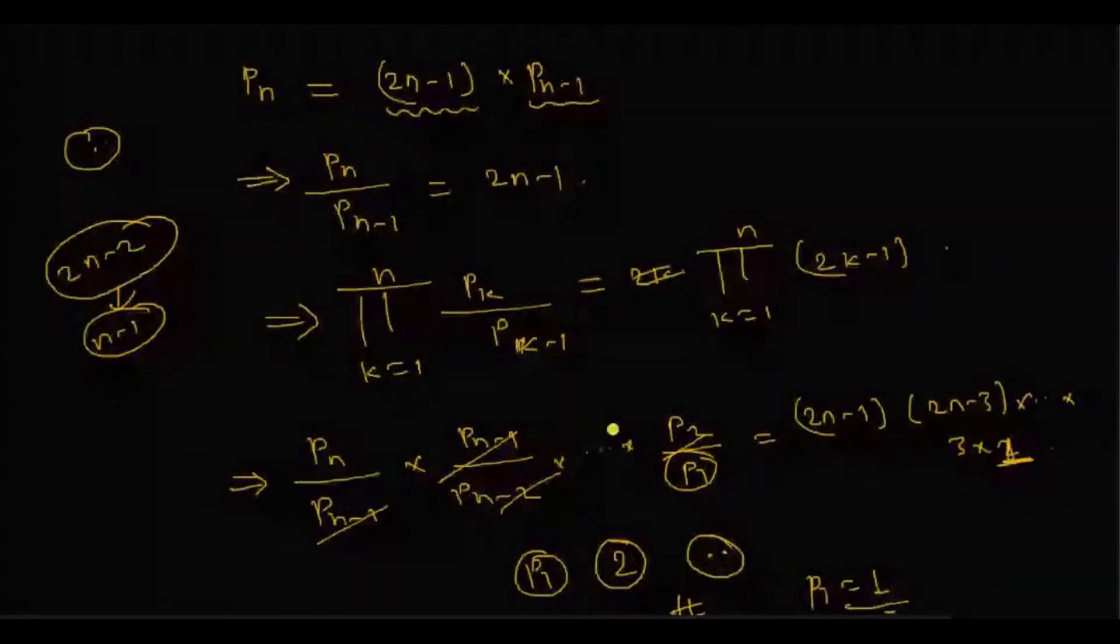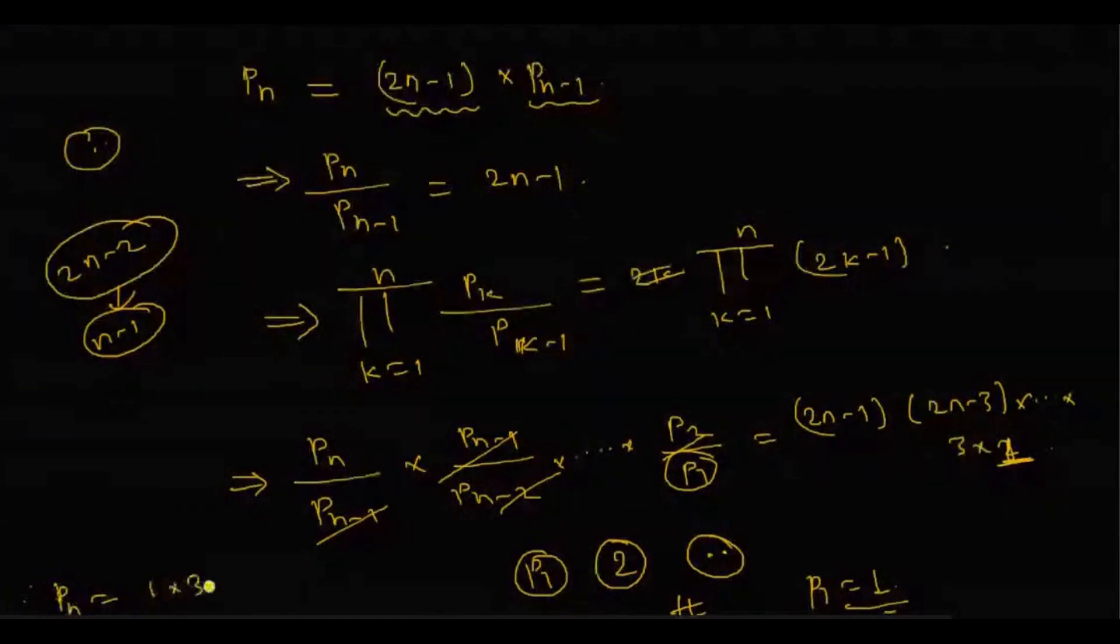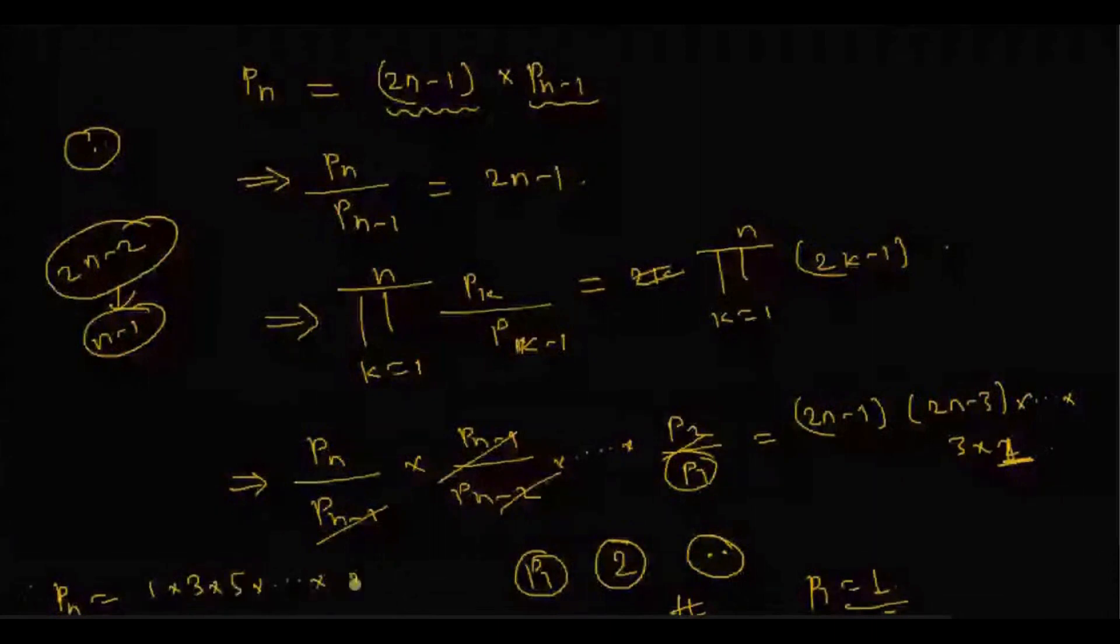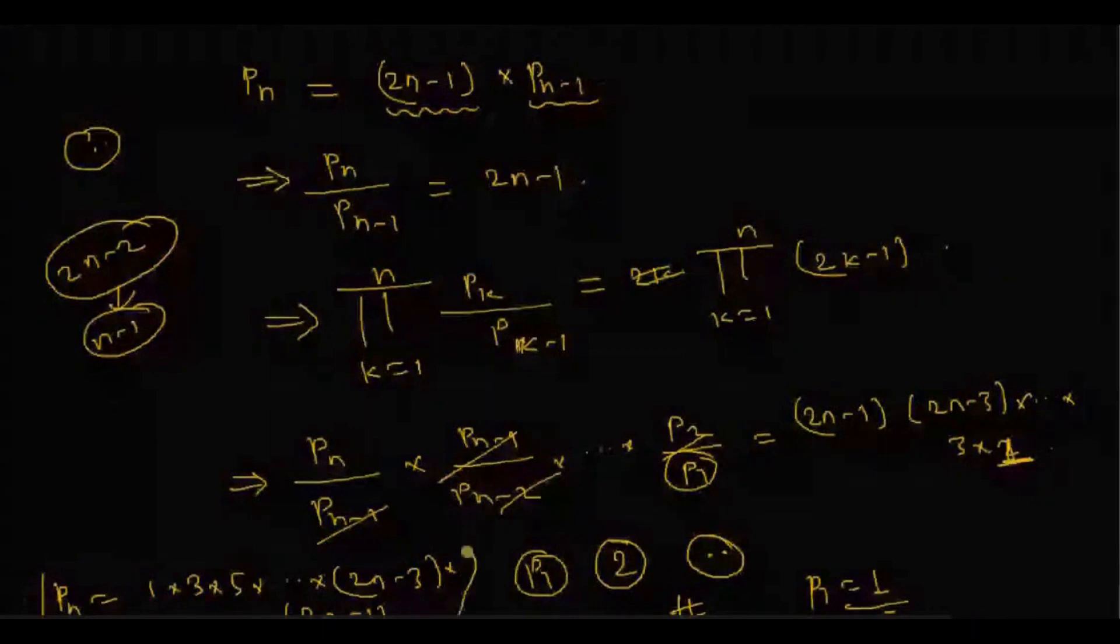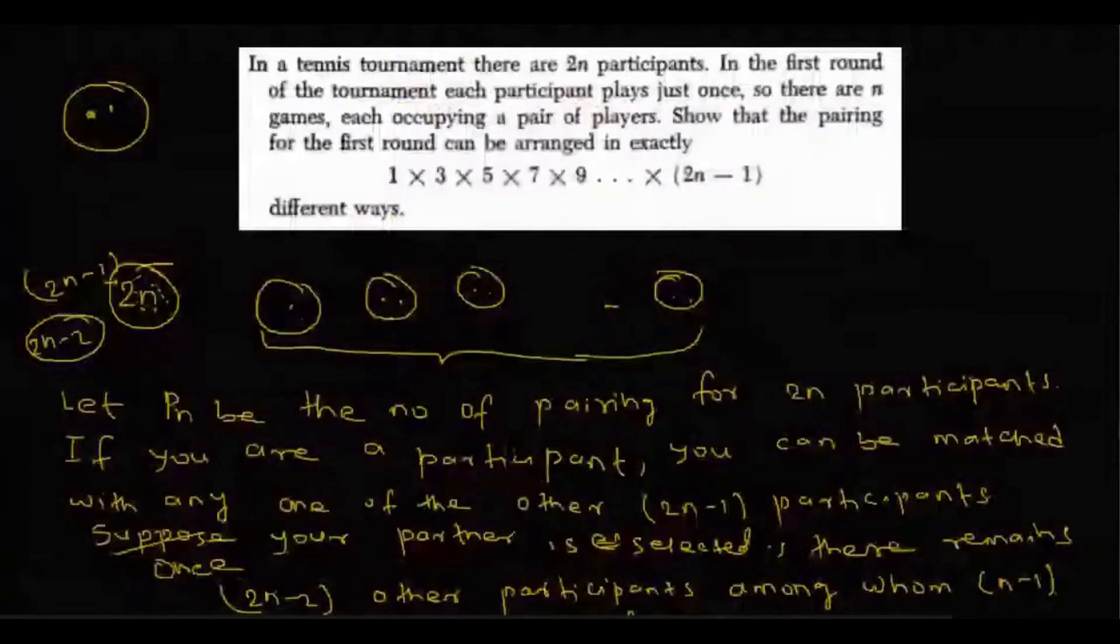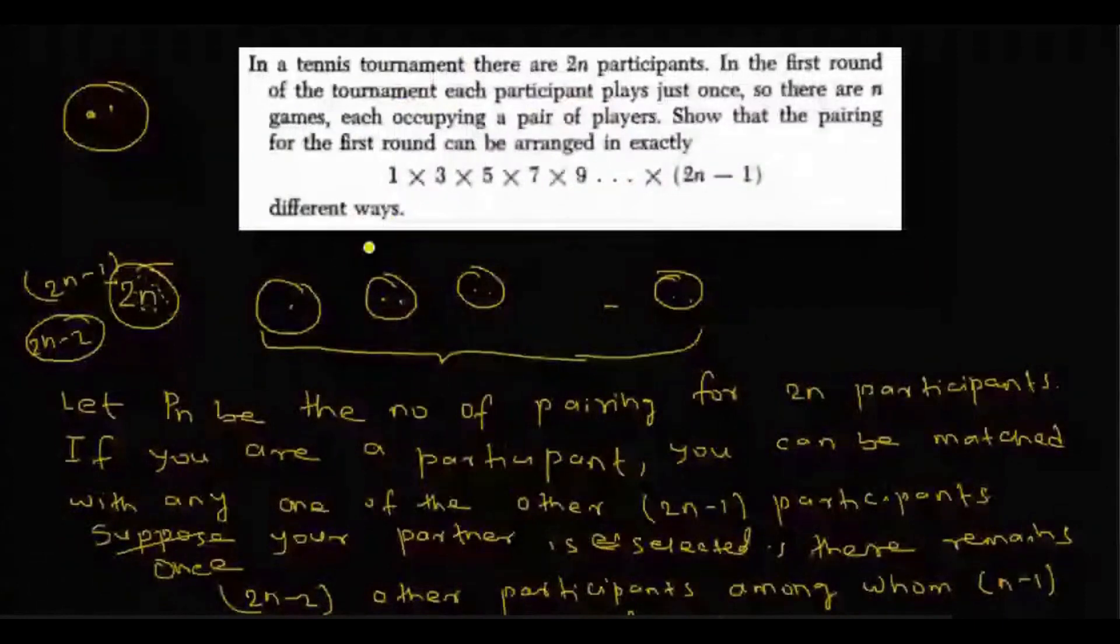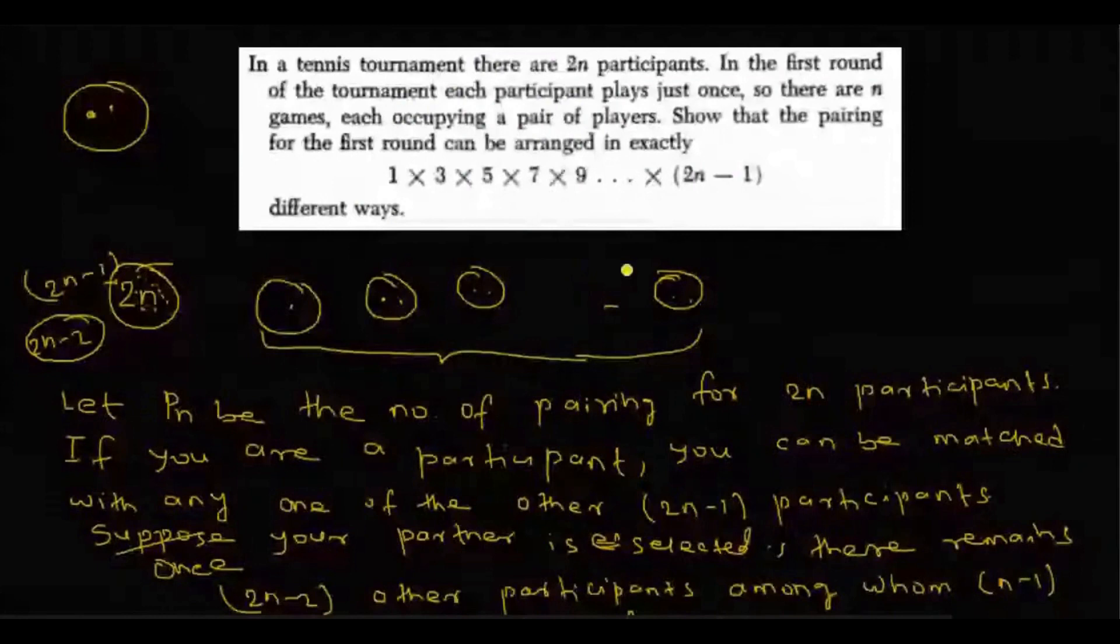Therefore Pn is equal to 1 into this thing, 1 into 3 into 5 into 2n minus 3 into 2n minus 1. So this is the required number of pairings, such that 2n participants can form n pairs, such that each pair contains exactly two players. So this is how this problem is solved.